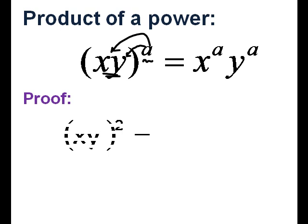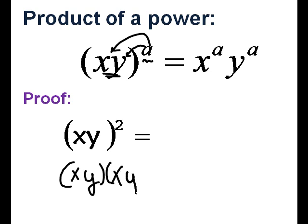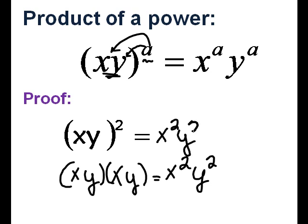So let me show you how that works. xy squared is the same thing as saying xy times xy. Well, how many x's do we have? 2, so that's x squared. And how many y's do we have? 2, so that's y squared. That's the same thing as x squared y squared, which follows our formula.